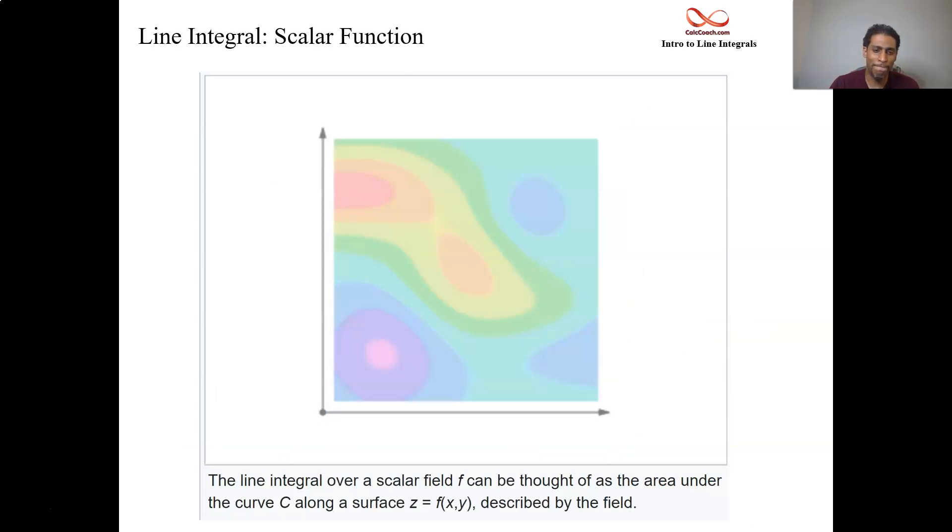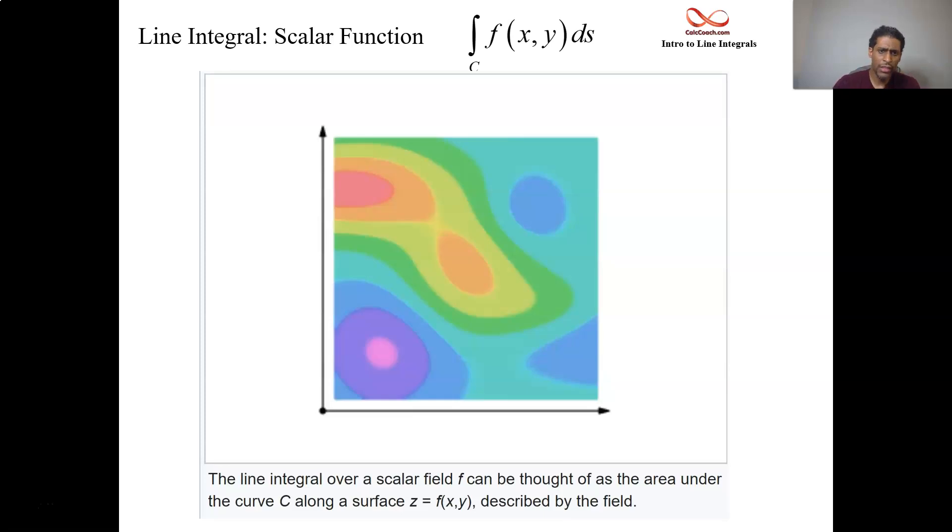This particular drawing is straight from Wikipedia. It's representing our scalar function line integral. The square represents, the colors represent different altitudes of a multi-variable function, the f(x,y).